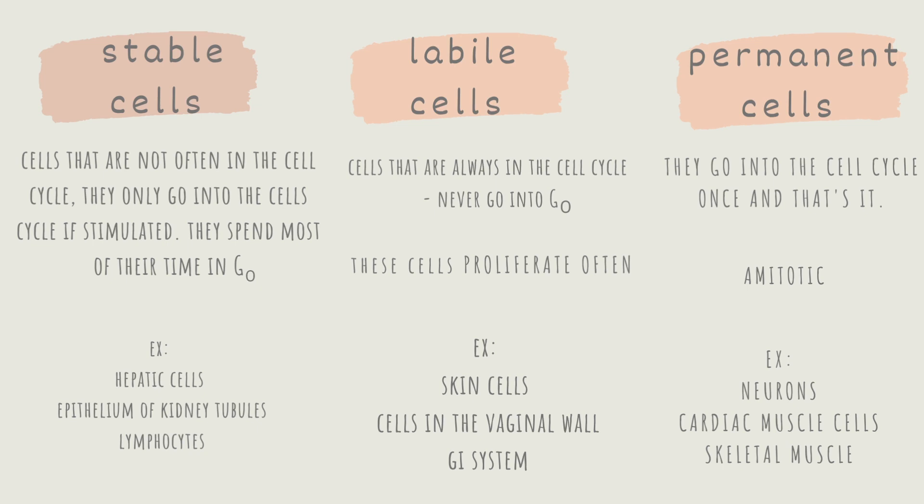Permanent cells go into the cell cycle once and that's it. They are birthed from the cell cycle and that's it. These are amitotic cells. A meaning without, so amitotic meaning they don't undergo mitosis.